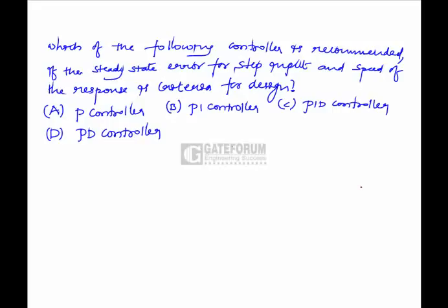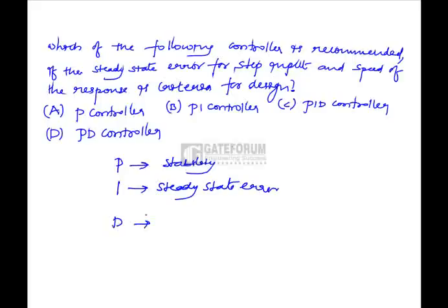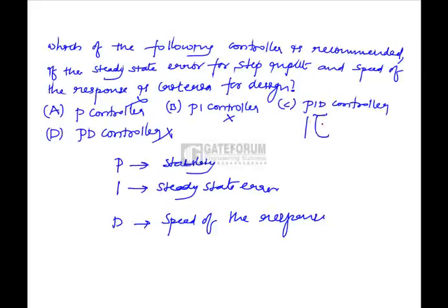Which controller is recommended if steady-state error for step input and speed of response are design criteria? A proportional controller is for stability, an integral controller is for steady-state error, and derivative action (damping) improves speed of response. The PID controller addresses all three, so option C (PID controller) is correct for this question.